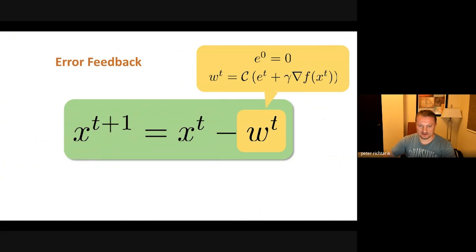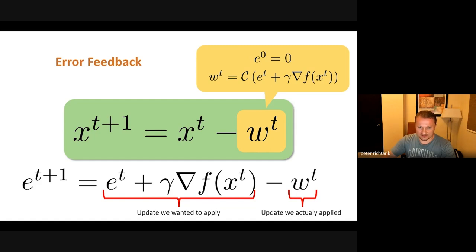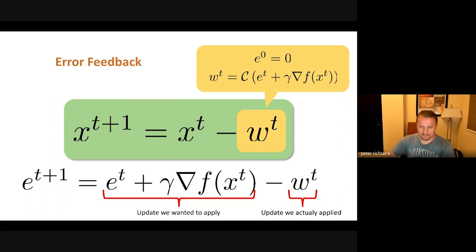Error feedback works as follows. You update your current model x_t by taking a descent direction in step W_t. At the beginning, W_0 is just the compressed gradient — you compress the step size times the gradient since E_0 is zero. You send the compressed gradient W_t, but what you really wanted to send was E_0 plus gamma times gradient of x_0. So E_{t+1} is the difference between what you wanted to send and what you actually sent. The idea of error feedback: add this error to the next gradient before compression, and repeat.